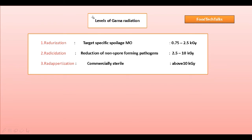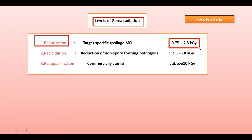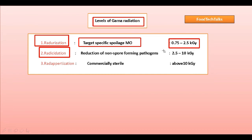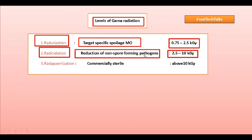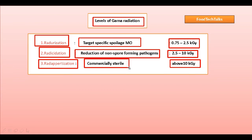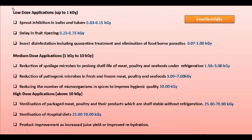The classification of gamma ray dose levels: in radurization, the dose level varies from 0.75 to 2.5 kilogray, which targets specific spoilage microorganisms. Radicidation has a dose of 2.5 to 10 kilogray, which reduces non-spore-forming pathogens. Finally, radappertization has a dose of above 10 kilogray, which is used for commercial sterilization.